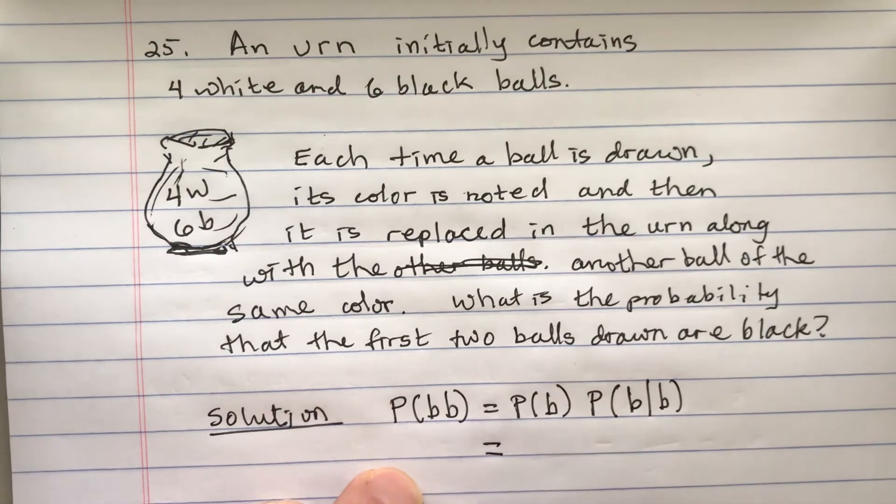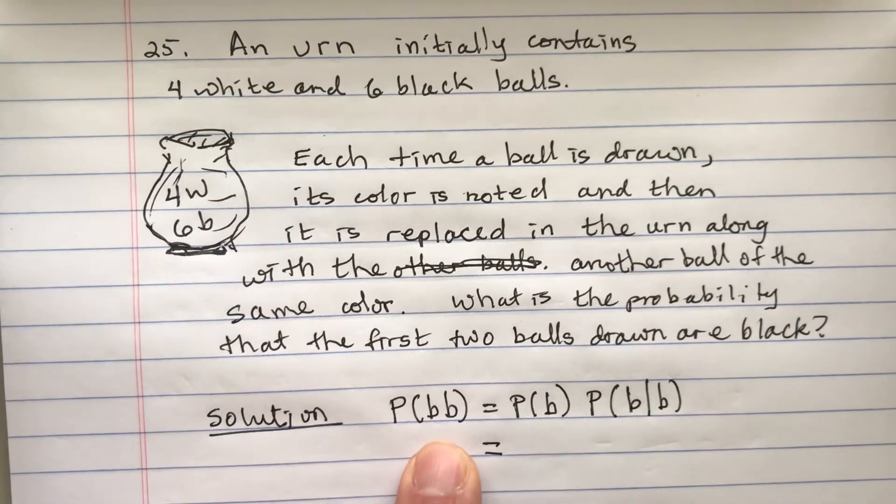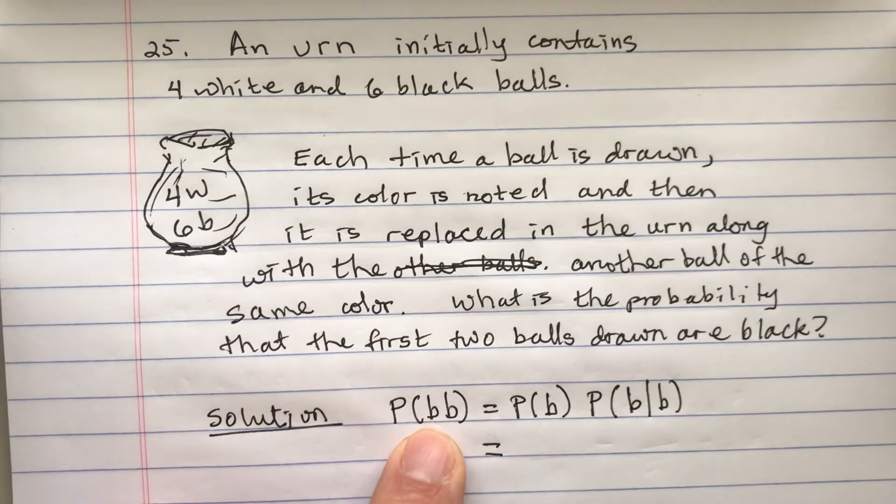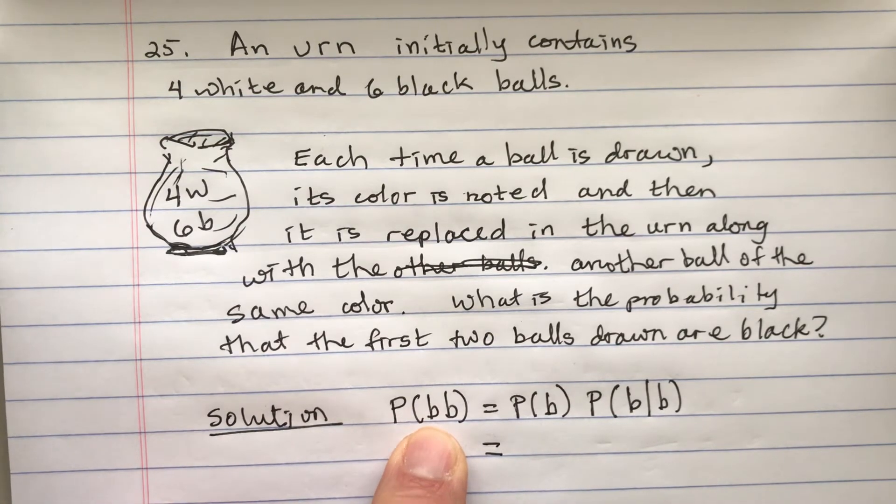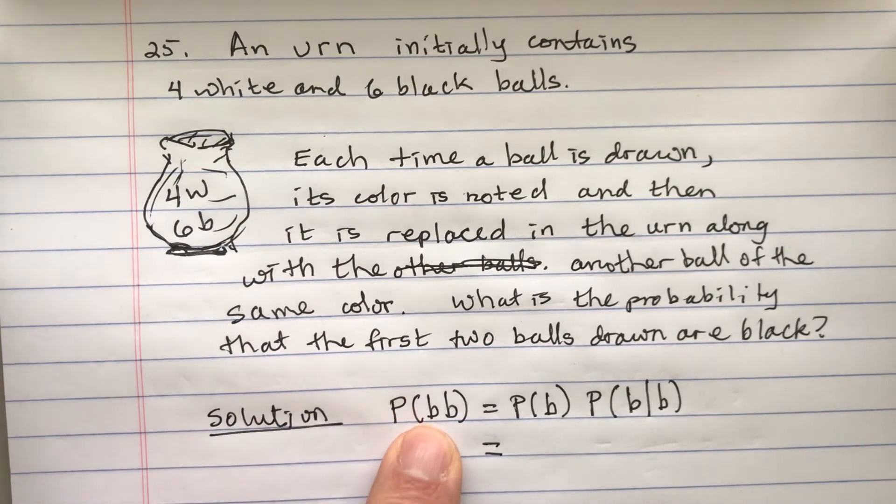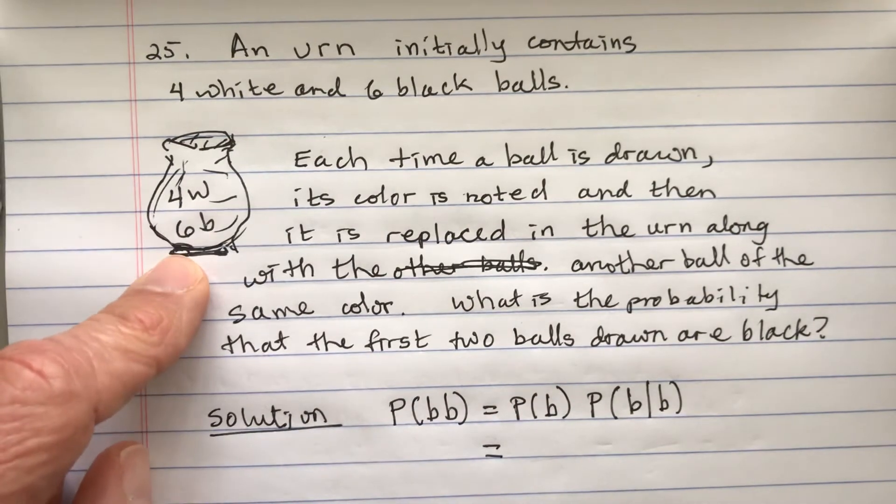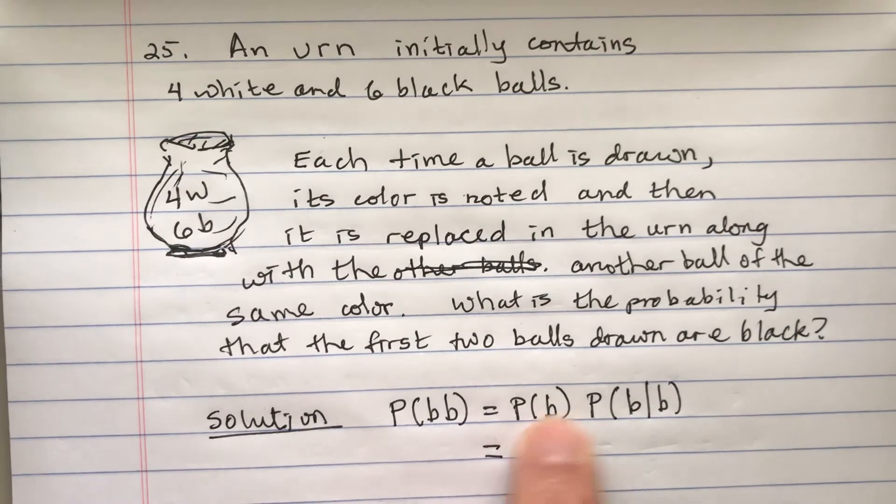So the probability that the first one is black - we have two different things, one following the other. First we're going to draw one of the balls and then we're going to draw another one.